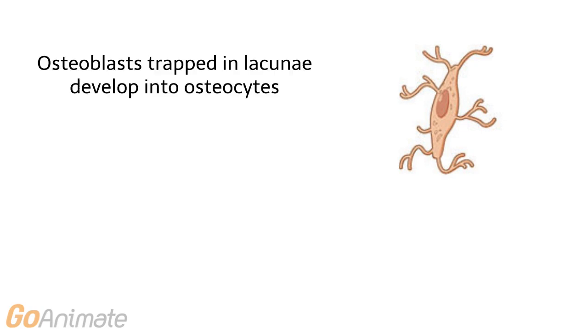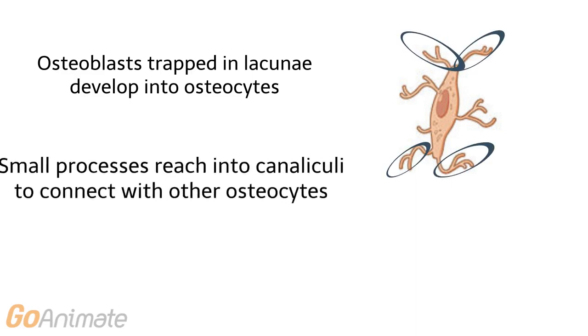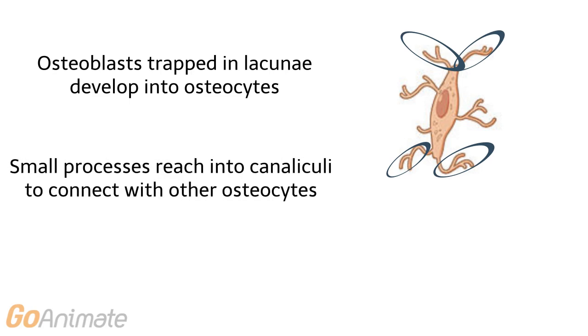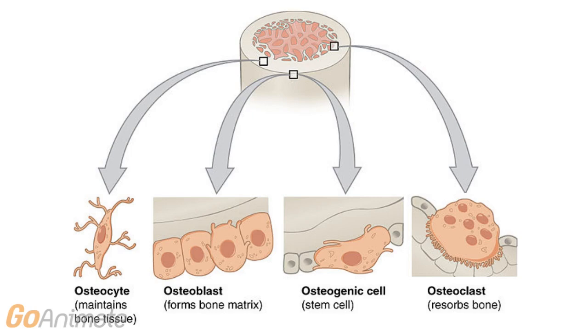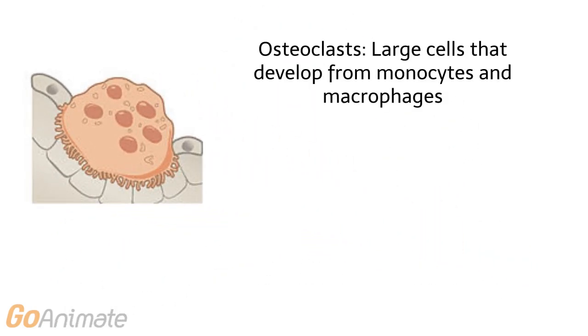Depending on their location, osteocytes can form or resorb bone and contribute to remodeling of bone according to applied forces. Osteocytes contain small processes that reach into canaliculi to connect with other osteocytes. Osteoclasts are large cells that develop from monocytes and macrophages, and their function is to resorb bone.